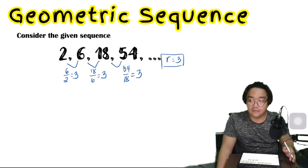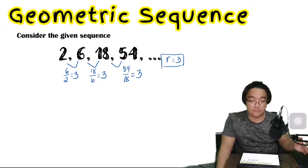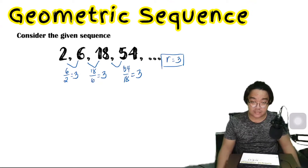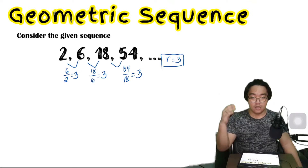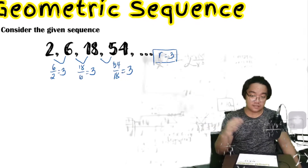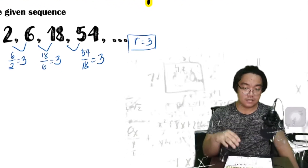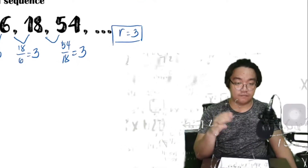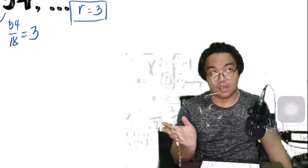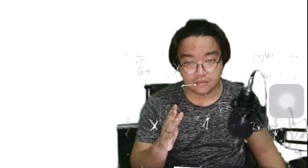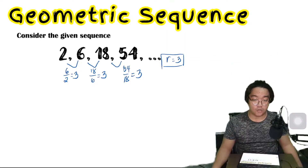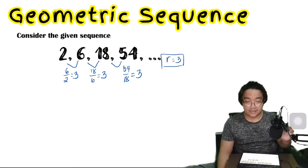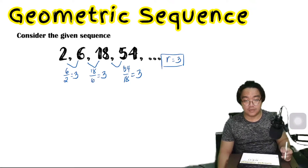If you are asked to find the 20th or 50th term, we could continue the sequence by multiplying: 2 times 3 is 6, 6 times 3 is 18, 18 times 3 is 54, 54 times 3 is 162, and so on until we reach the term we are looking for. But let's derive a formula using this example.